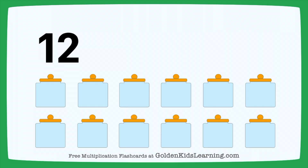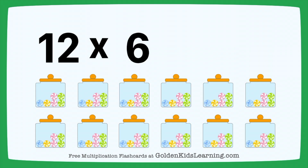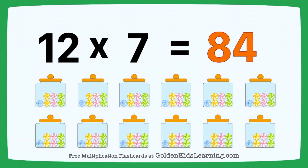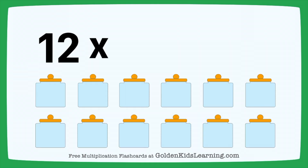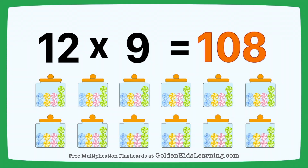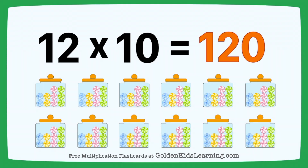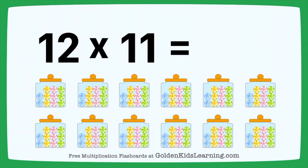12 times 5 equals 60. 12 times 6 equals 72. 12 times 7 equals 84. 12 times 8 equals 96. 12 times 9 equals 108. 12 times 10 equals 120. 12 times 11 equals 132.